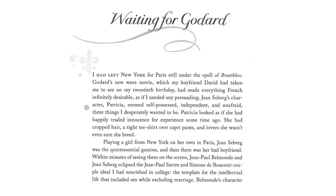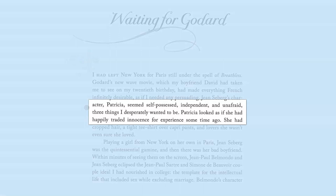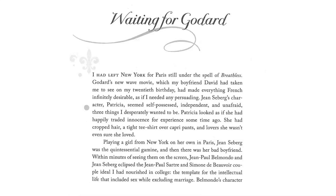You should have found five pieces of evidence that build this idea of Bildungsroman. Just looking at the first paragraph, for example, the line: 'Patricia seemed self-possessed, independent and unafraid. Three things I desperately wanted to be. Patricia looked as if she had happily traded innocence for experience some time ago.' Those two sentences are classic examples of what we see in a Bildungsroman piece of writing — this longing, this desire to form an identity, and framing experiences based on other people. Make sure you have five examples so it's really clear this is a coming of age piece of writing.